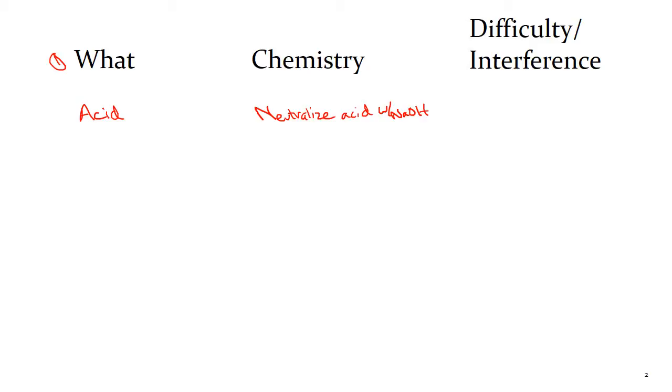What's the difficulty? What's the interference? Well, the difficulty really is simply picking an endpoint. And remember, there are two ways to do that. One, we can use an indicator, phenolphthalein, and then we just titrate to that pink endpoint.